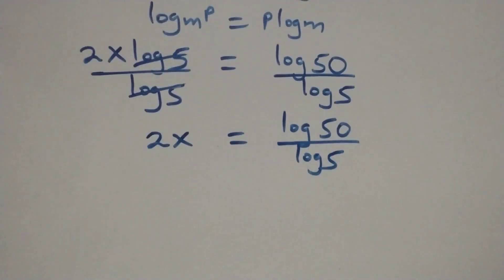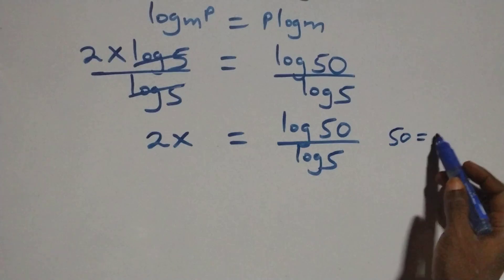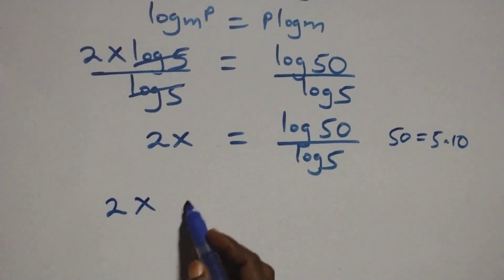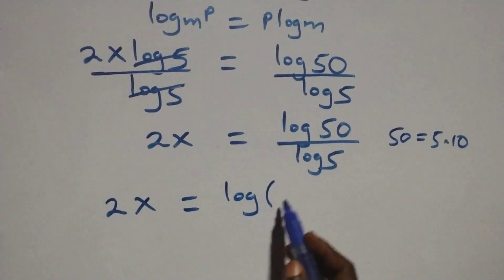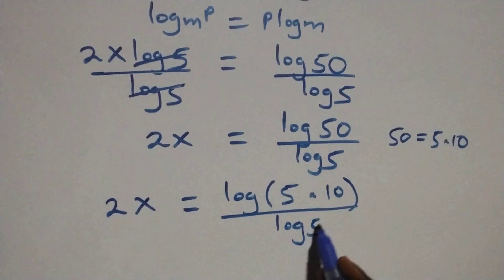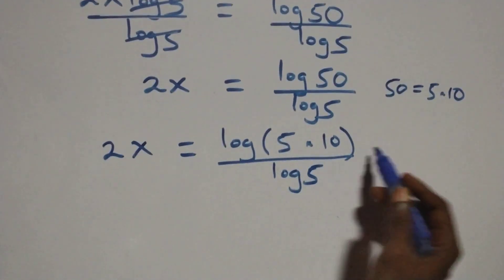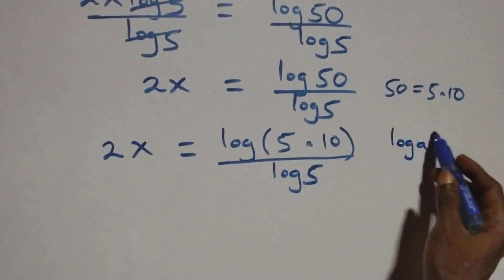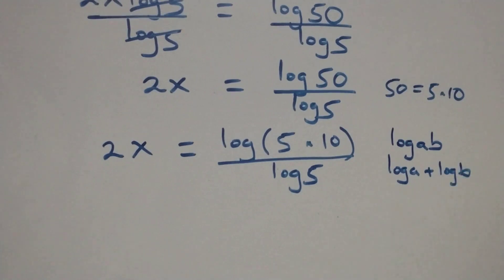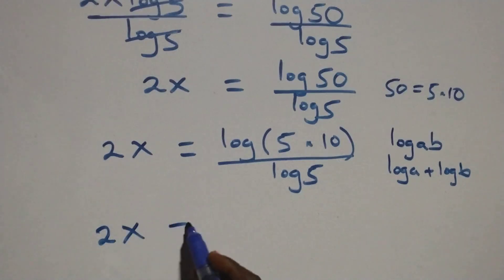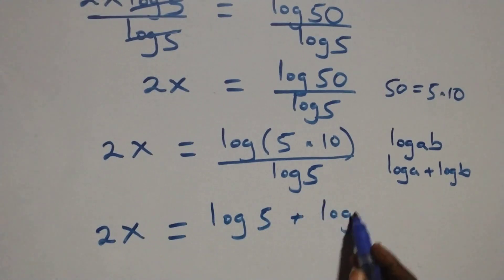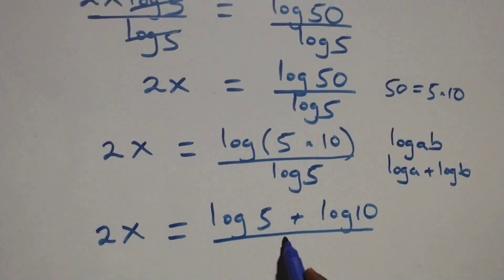From here, 50 can be written as 5 times 10, so all we have becomes 2x equals to log of 5 times 10 over log 5. This follows the product rule of logarithm: when we have log a times b, this is the same thing as log a plus log b. So we have 2x equals to log 5 plus log 10 over log 5.